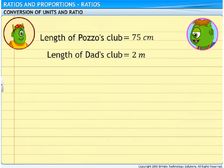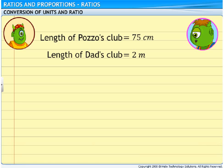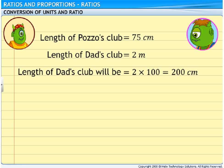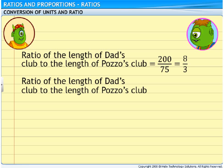I'll explain. Look, the length of your club is in centimeters, while the length of my club is in meters. Centimeters and meters are different units of length. To calculate ratio, the two quantities must always be measured using the same unit. To make the units the same, we need to convert meters into centimeters. One meter is equal to 100 centimeters. So, the length of my club will be 2 into 100, which is 200 centimeters. Therefore, the ratio of the length of my club to the length of your club will be 200 upon 75. On dividing the numerator and the denominator by 25, the ratio is 8 is to 3.